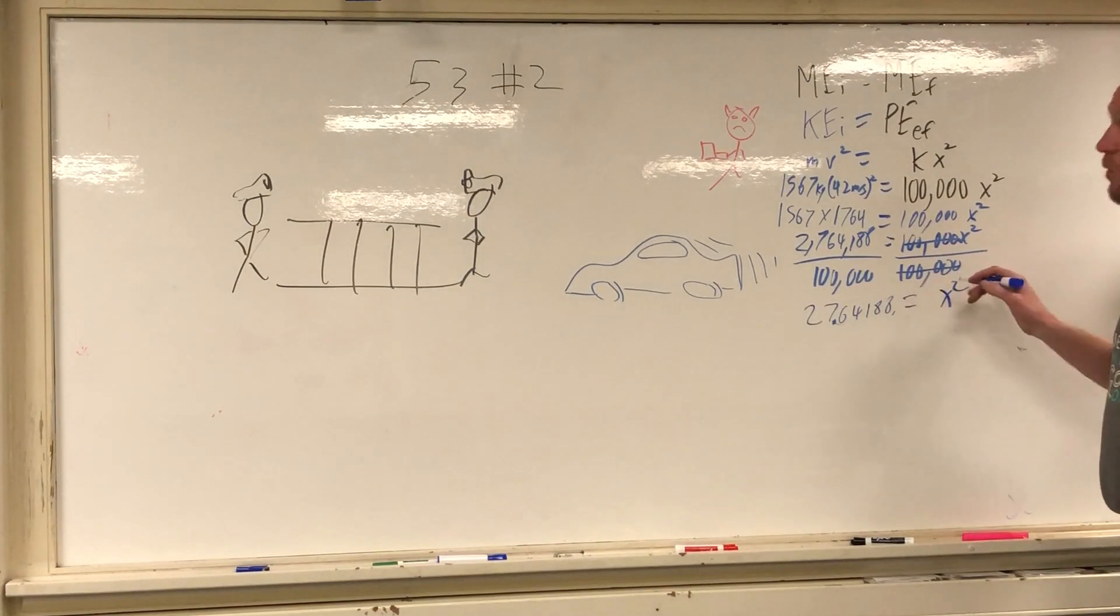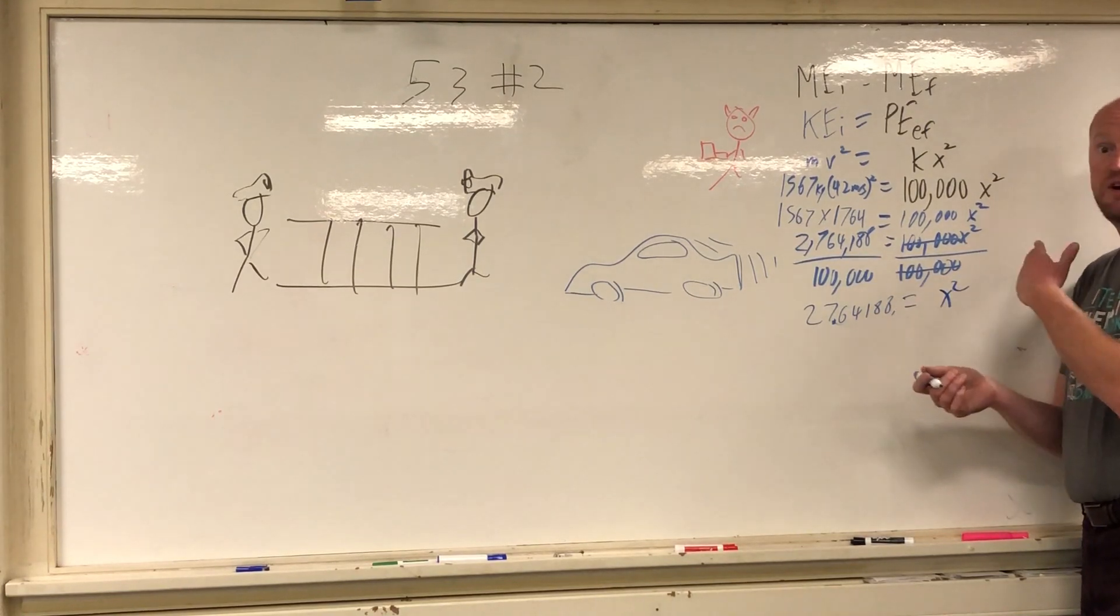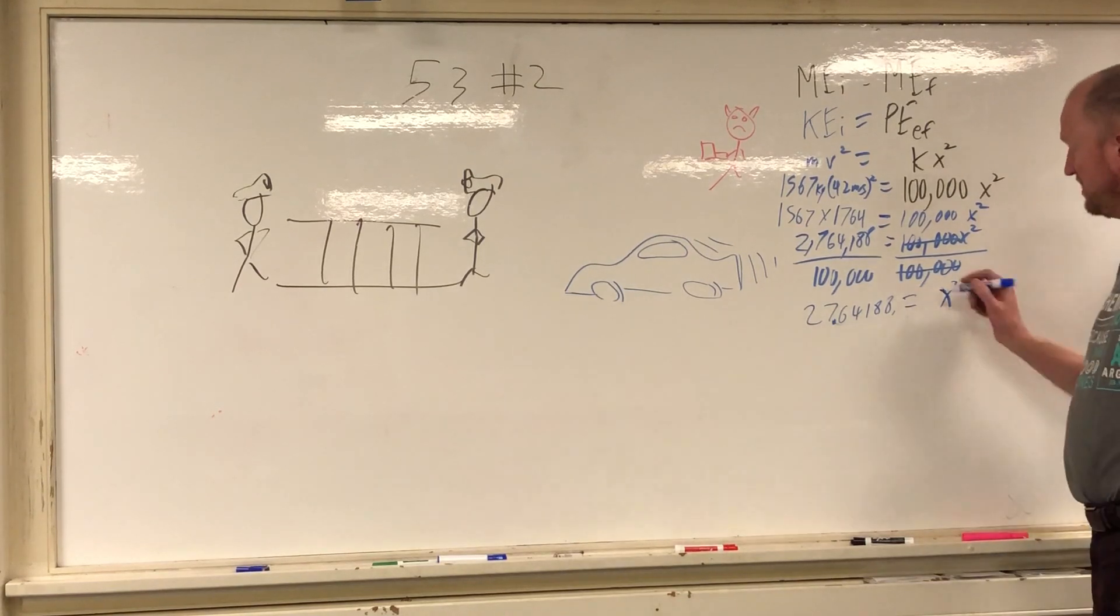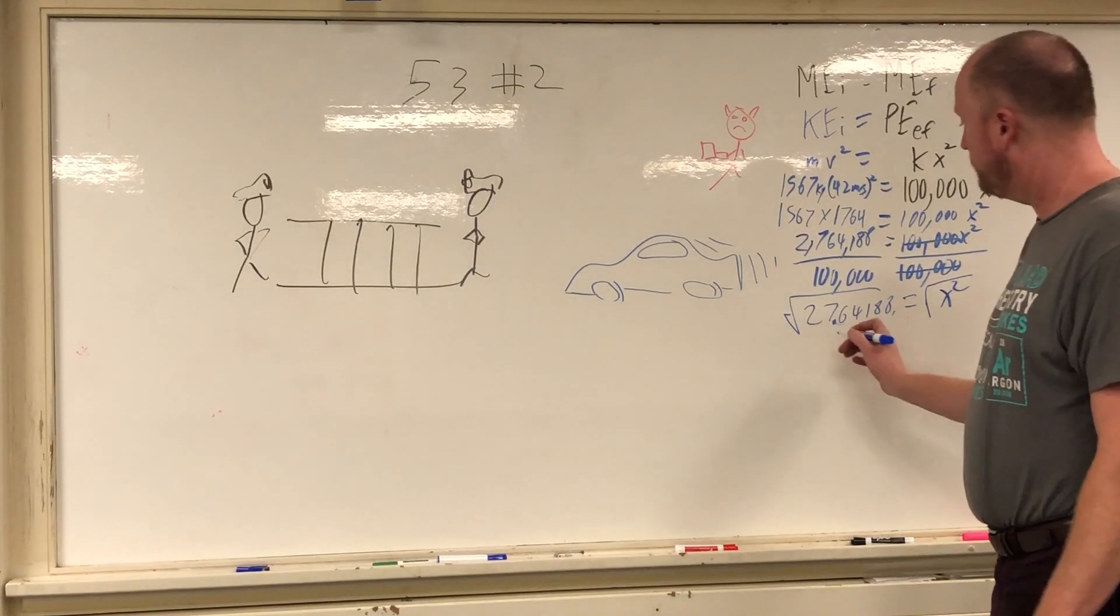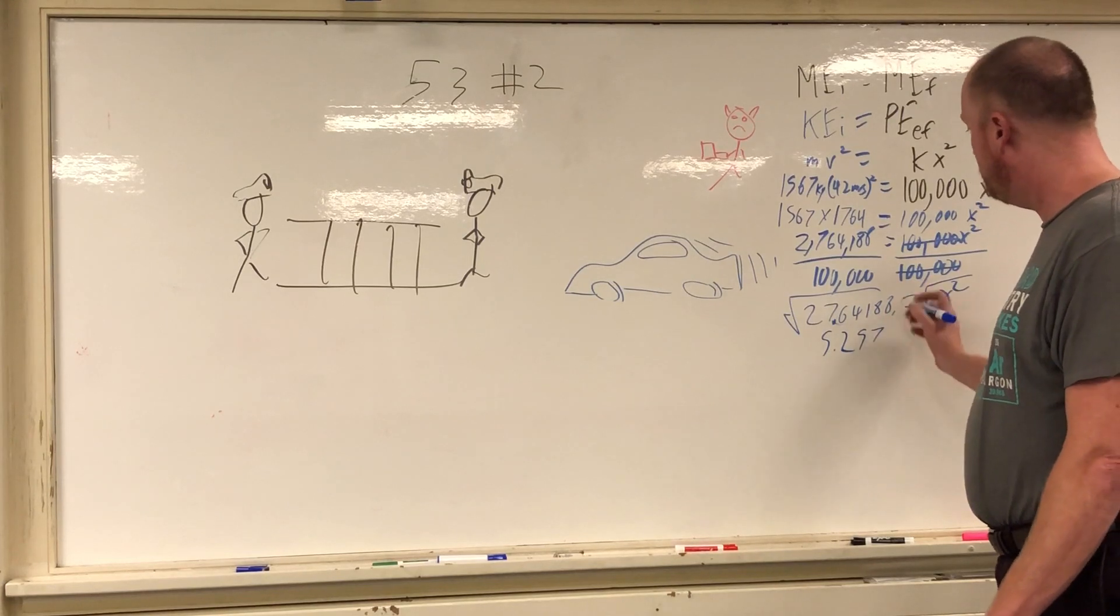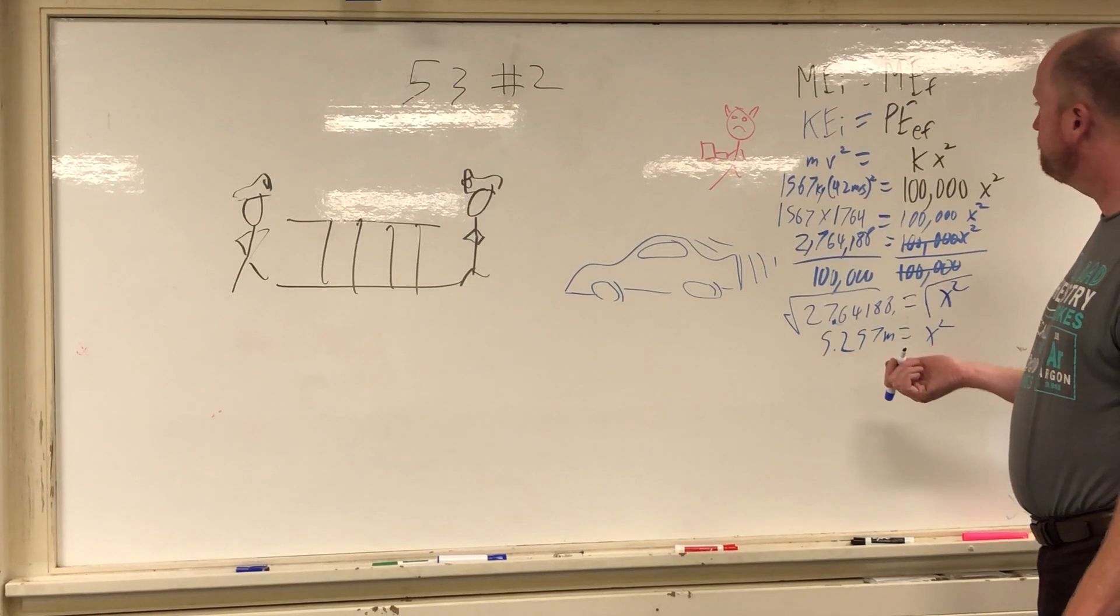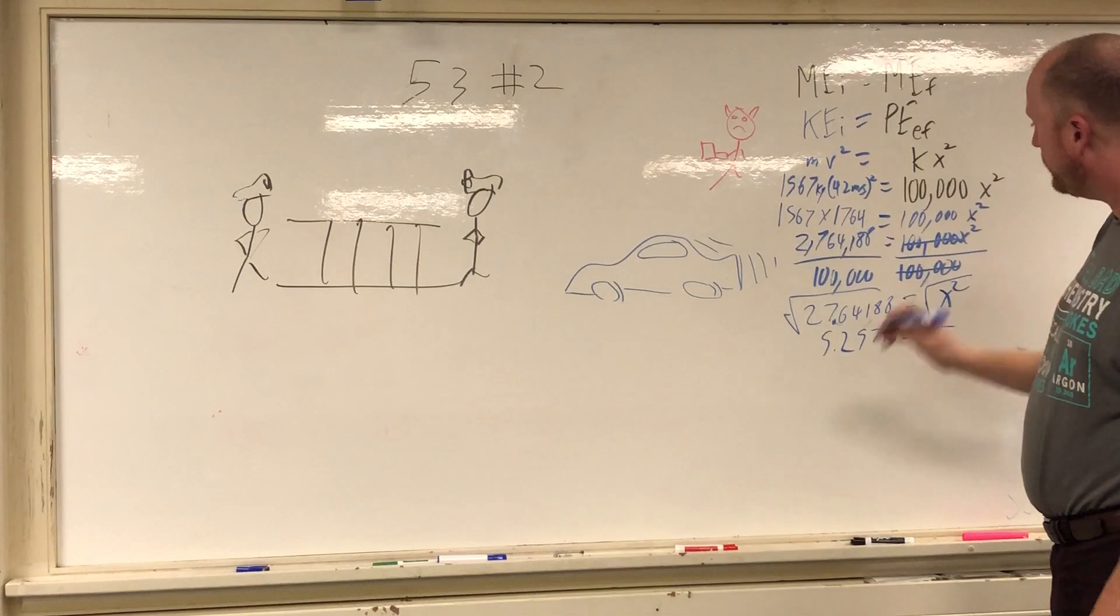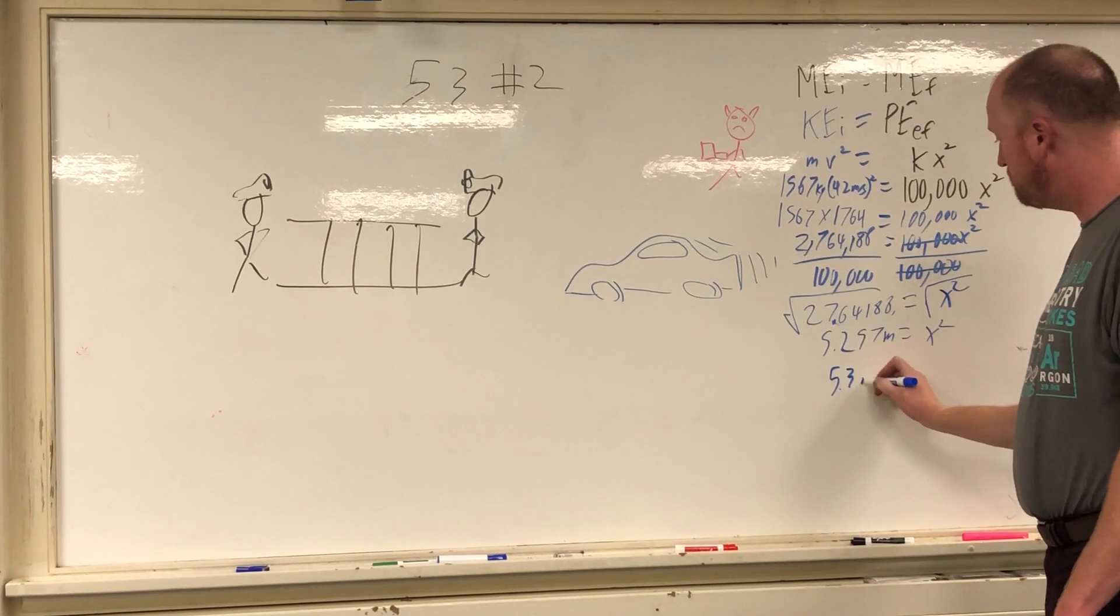Now we don't want x squared, we want x. This is one of the most common things that happens. People get all the way down here, they solve for x squared and they just leave it as x squared. Solve for x, you need to get the square root of both sides. When you do that you get 5.2257 meters equals x. Now you only have two sig figs here, so we're going to round it to two sig figs. So let's just make that 5.3 meters is equal to x.